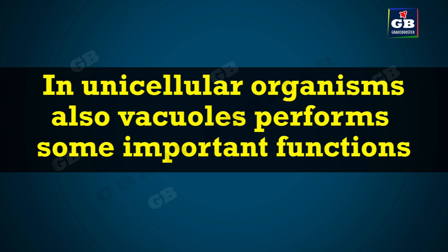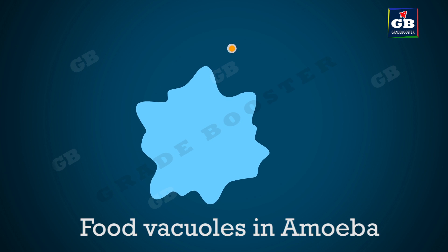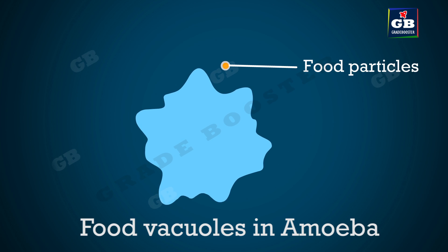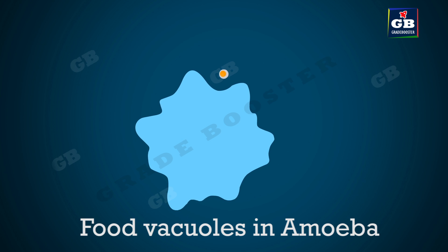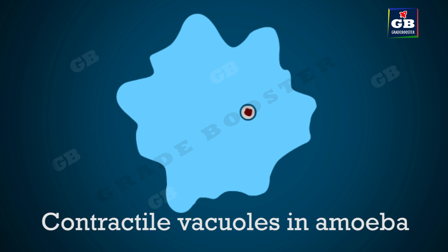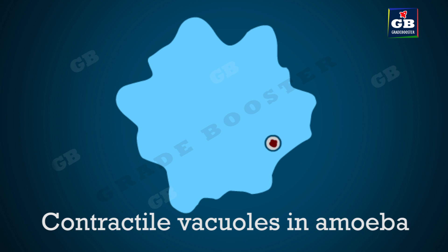In unicellular organisms also, vacuoles perform some important functions. In organisms like amoeba, the food enters the food vacuoles where it is digested and absorbed. In the same way, contractile vacuoles are formed to collect and excrete the excess water and waste materials.